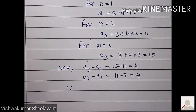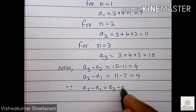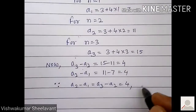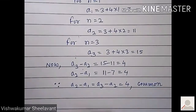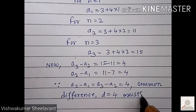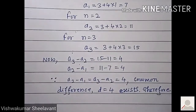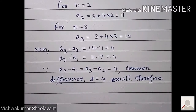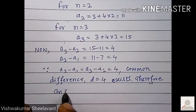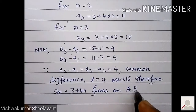Such type of questions you have already solved — find whether given terms form an AP or not. Instead of that, here they have asked you to prove or show that an AP is formed. Since a2 minus a1 is equal to a3 minus a2, equal to 4, the common difference d equal to 4 exists. Therefore, an equal to 3 plus 4n forms an AP.